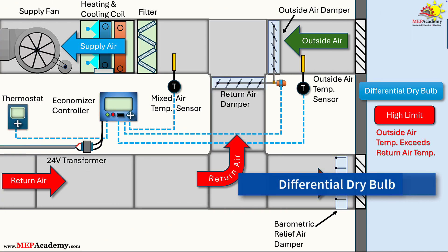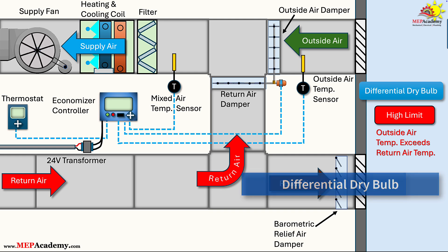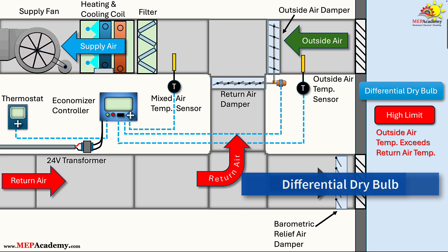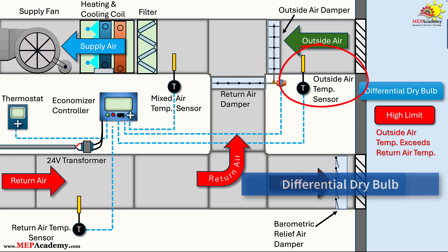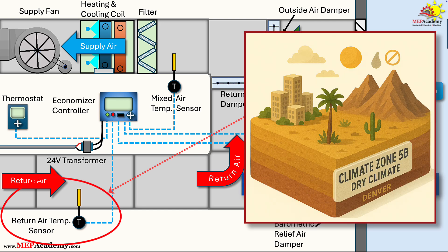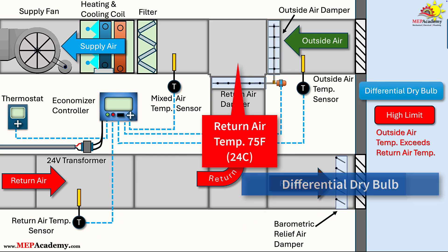Differential Dry Bulb Strategy. The differential dry bulb strategy improves upon the fixed approach by comparing the outdoor air dry bulb temperature to the return air temperature from the building. The economizer disables only when the outdoor air is warmer than the return air, allowing for more dynamic operation based on actual indoor conditions. This requires two temperature sensors – one for outdoor air and one for return air. For example, in a data center in a dry climate like Zone 5B, such as Denver, the return air might be at 75°F due to internal heat loads.